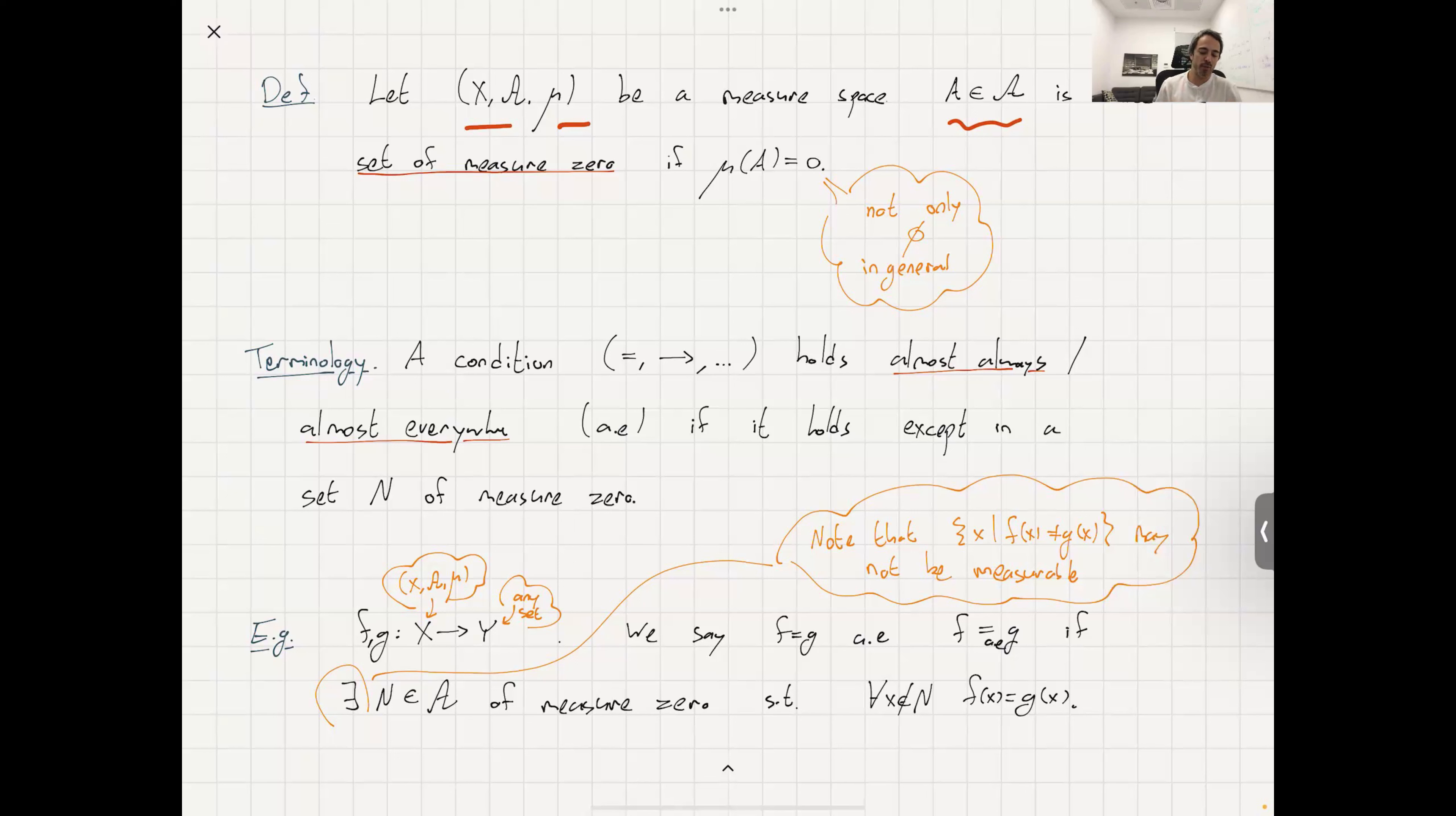Now the terminology people use all the time is, they have a condition - maybe equality condition or implication or limits or whatever - and they say that that property or condition holds almost everywhere or almost always. I want to explain what that means. It's very simple, but I need to say it once. Let me give you an example.